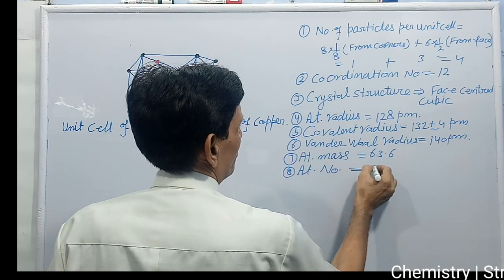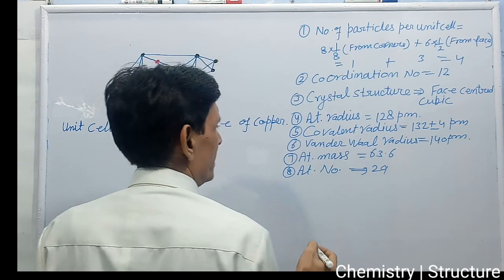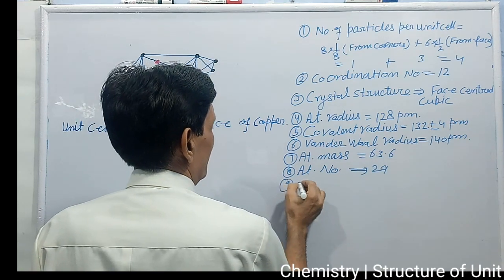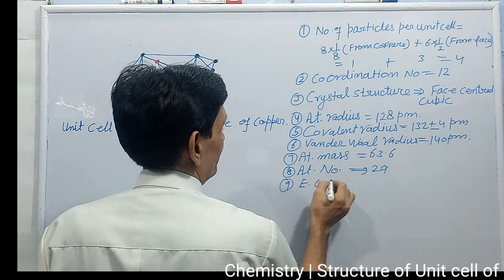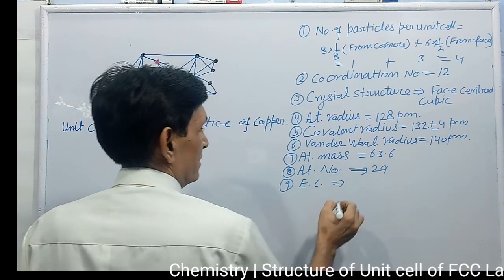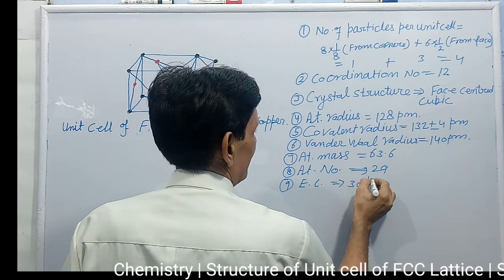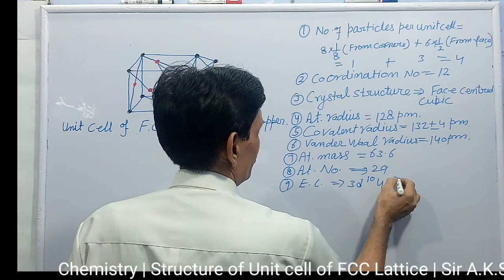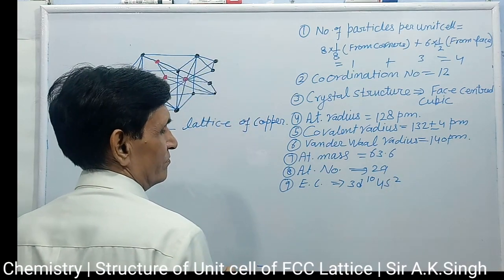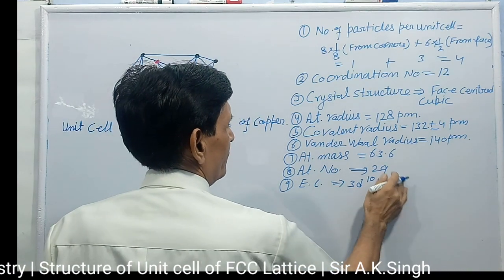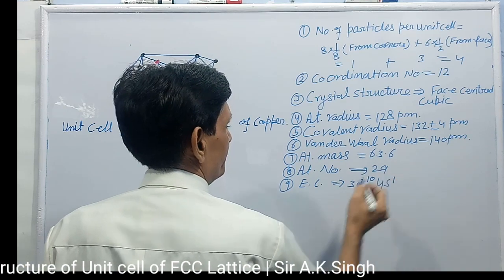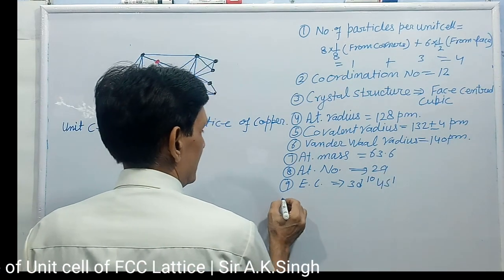We use the atomic number is 29. Now electronic configuration 3d10 and 4s2, 3d10 4s1. Next.